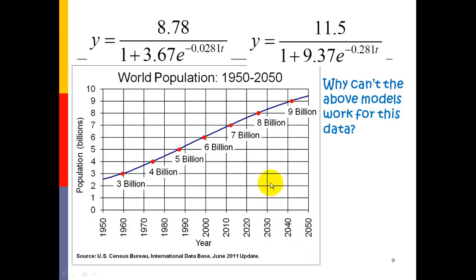One reason the first model does not work is because I'm looking at the value 8.78. For a logistic model, that's the ceiling — the number in the numerator represents the leveling off. Well, this graph will eventually level off, but it definitely goes beyond 8.78 billion, meaning it levels off later than that. Because this graph goes beyond 8.78 billion, our first function does not work — it has the wrong leveling-off point.